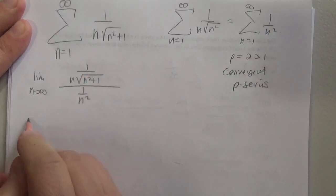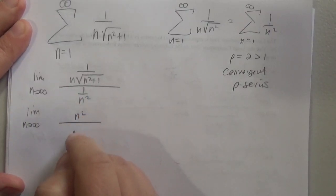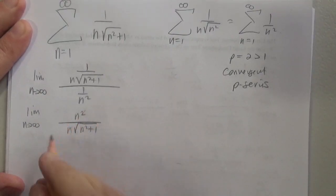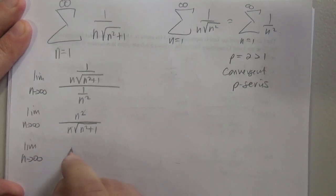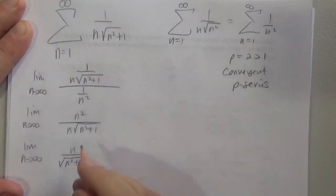So I'm going to flip and multiply here, so I get n squared over n times the square root of n squared plus 1. I'm going to cancel these n's right here, so the limit as n goes to infinity of n over the square root of n squared plus 1. And then I'm going to multiply top and bottom by 1 over n.